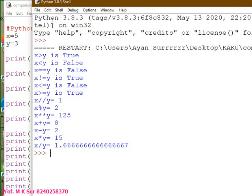And x divided divided y, look carefully, x divided divided y equals to 1, meaning quotient came.